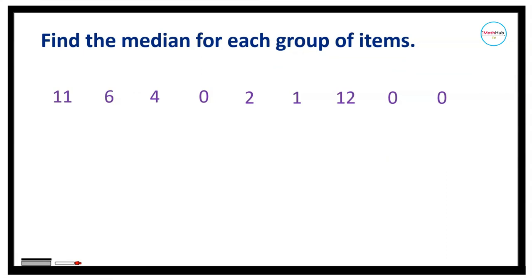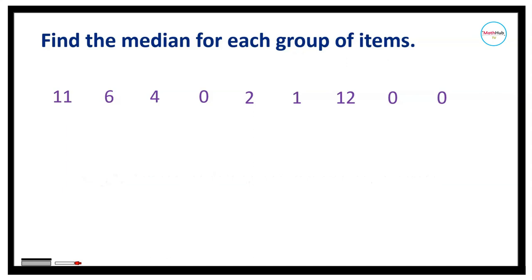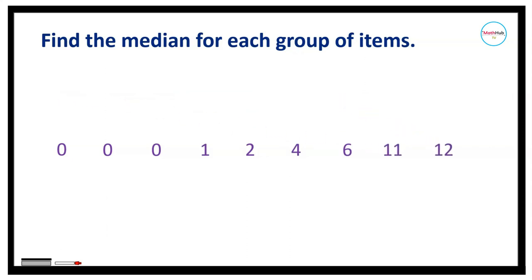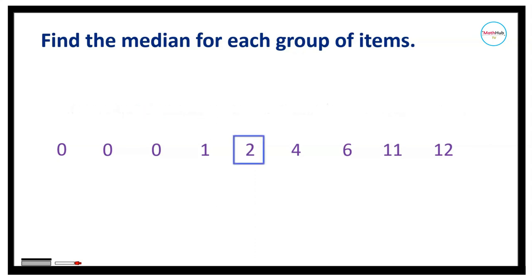For the next set of exercises, we will find the median for each group of data items. For the first group, to get the median it is important that we arrange the data first from smallest to largest. Arranging gives: 0, 0, 1, 2, 4, 6, 11, 12. The number of data items is 9, which is odd. If we have an odd number of data items, the median is the middle term — in this case, the fifth number, which is 2.